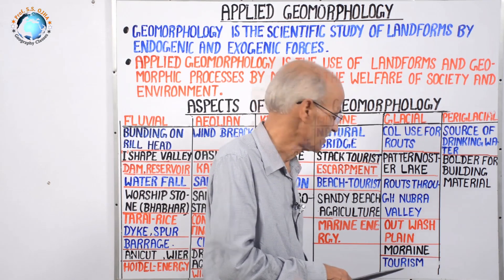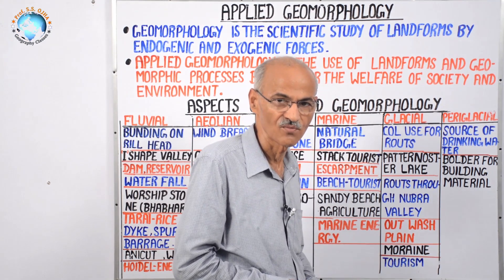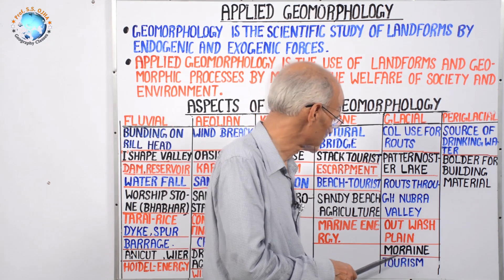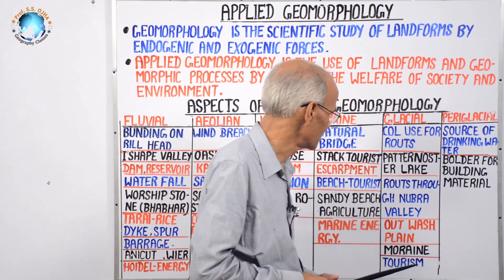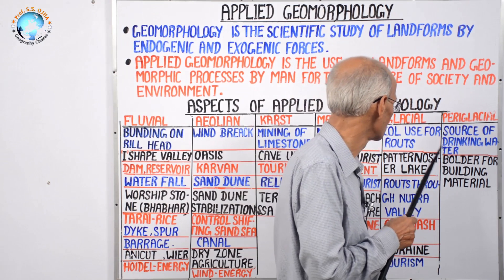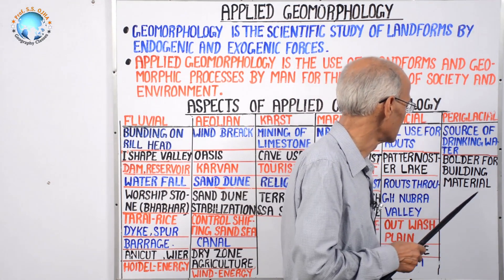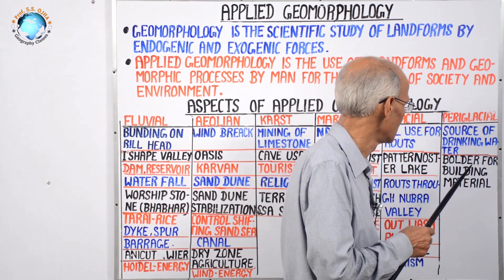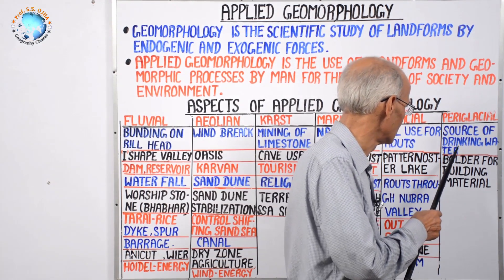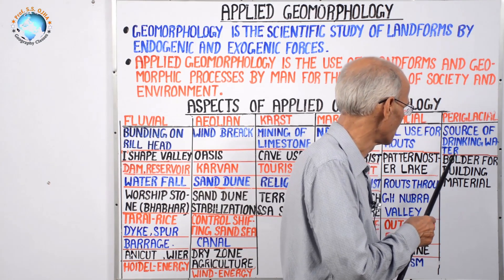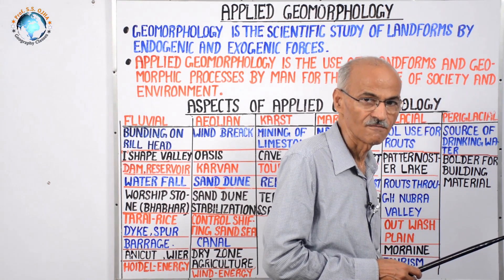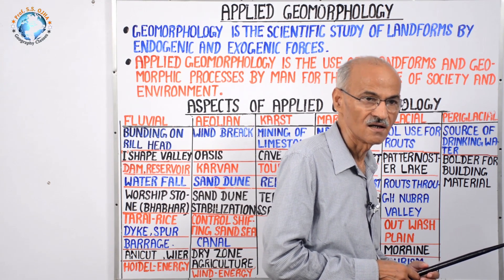Next is tourism, also practiced in glaciated regions — for example, Gangotri and Yamunotri, which are religious centers as well as tourist spots. Next is periglacial region, which surrounds the glacial region. In the periglacial region, water freezes and melts, and the meltwater is used as a source of drinking water. Periglacial regions predominate as a belt in Russia or Siberia.